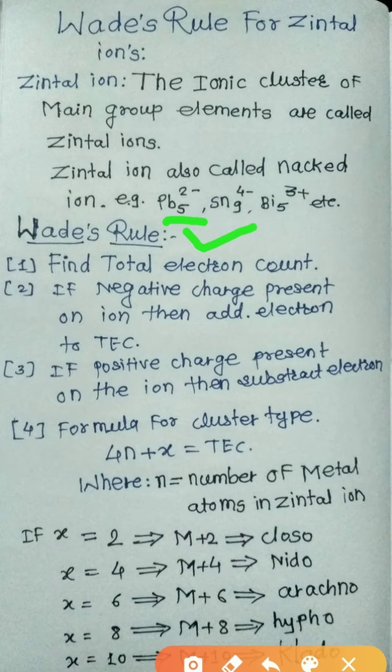So 4 multiplied by 5 gives 20 valence electrons. The second rule is: if a negative charge is present on the ion, add electrons to the total electron count. In Pb₅²⁻, a 2-negative charge is present, so add 2 electrons to the total valence electron count.